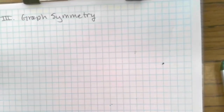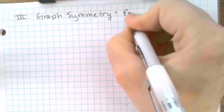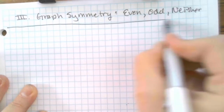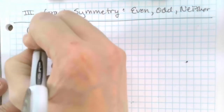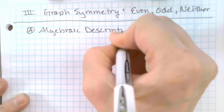Okay, number 3 — graph symmetry. Your choices for graph symmetry are even, odd, or neither. Even though the word symmetry seems to indicate it's going to be a visual thing, it actually isn't — it's an algebraic description. So part A is the algebraic description; you have to determine it using algebra.